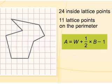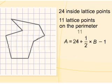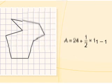Then he substituted the numbers into this formula. In this formula, A stands for the area, W represents the number of lattice points inside the polygon, B is the number of lattice points on the perimeter.